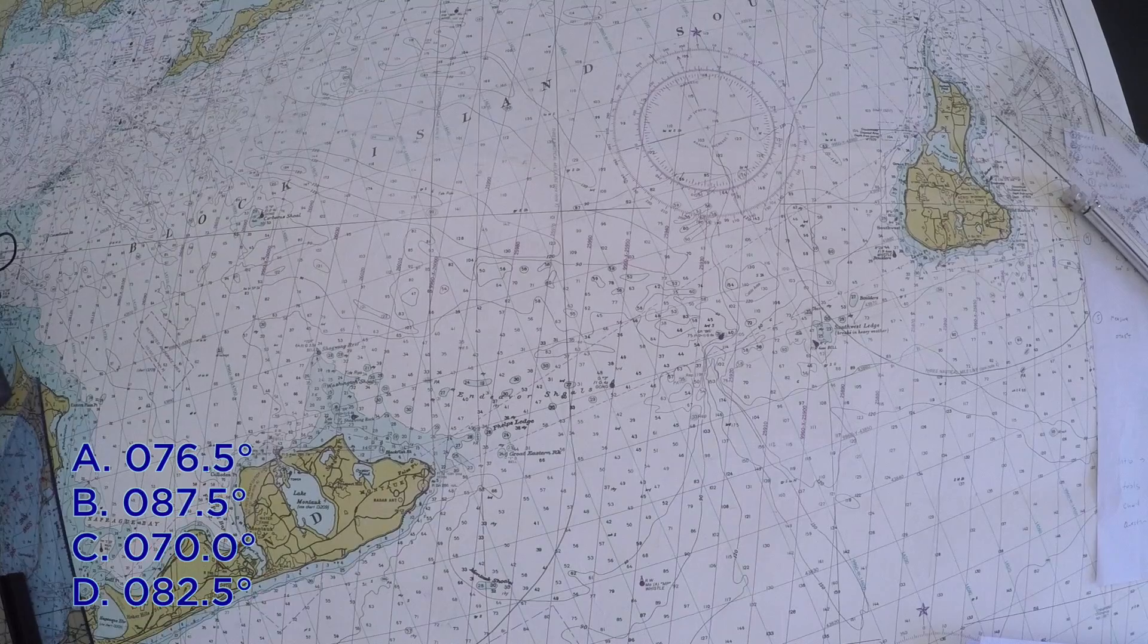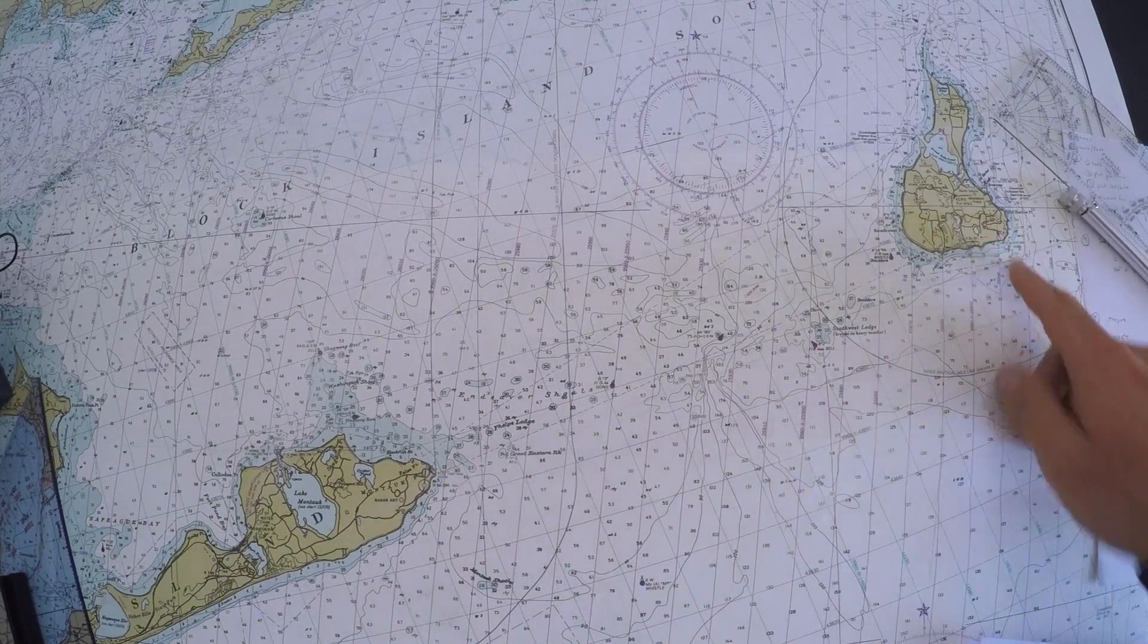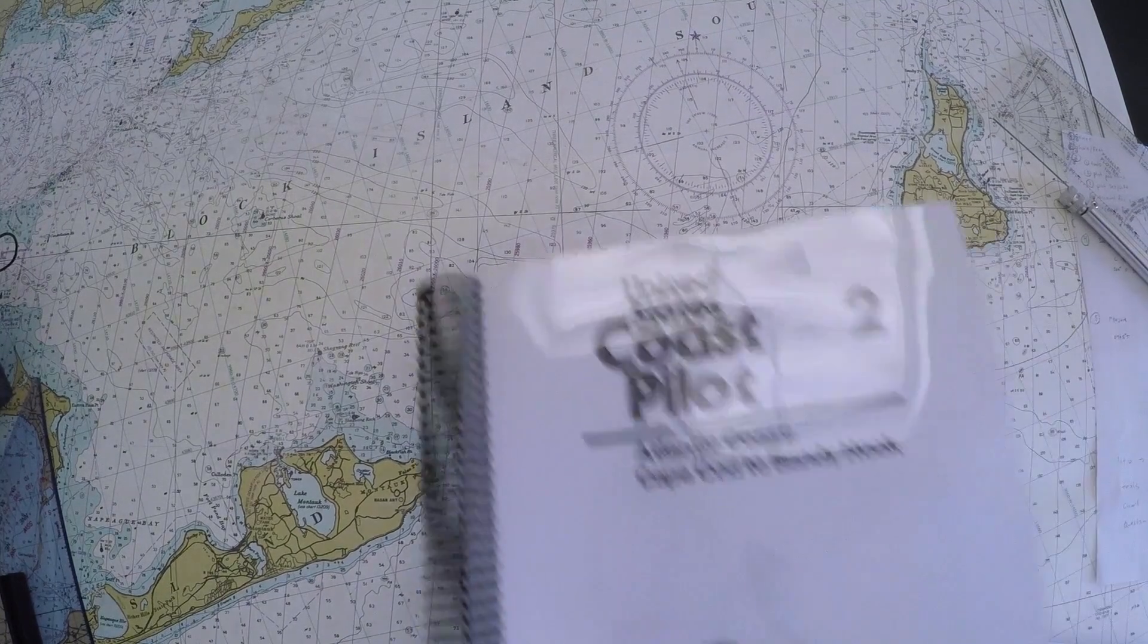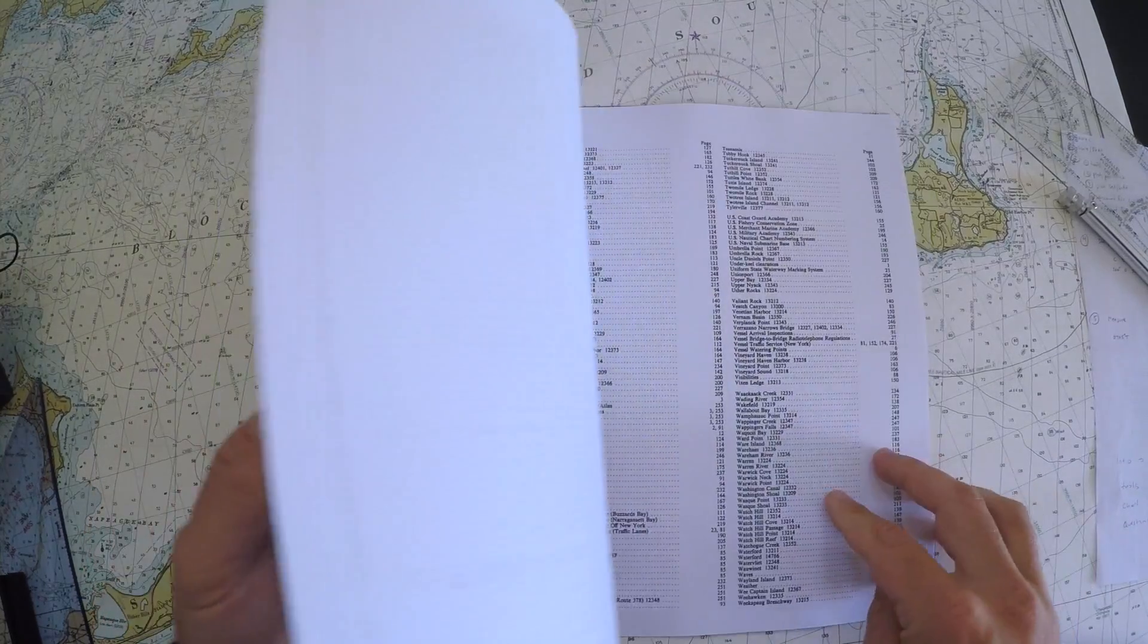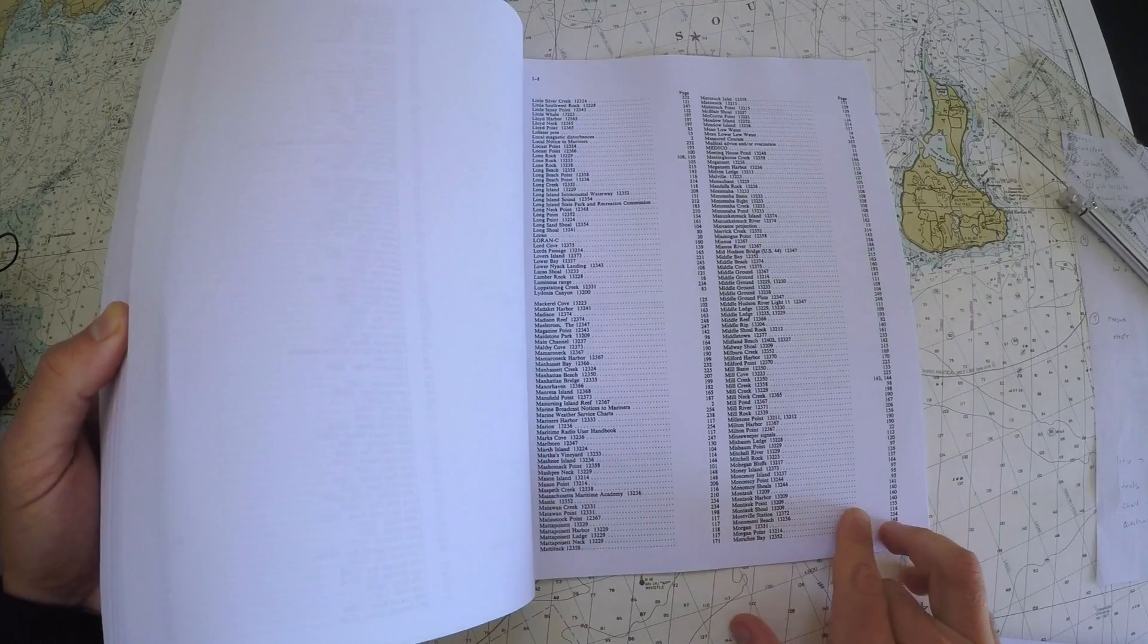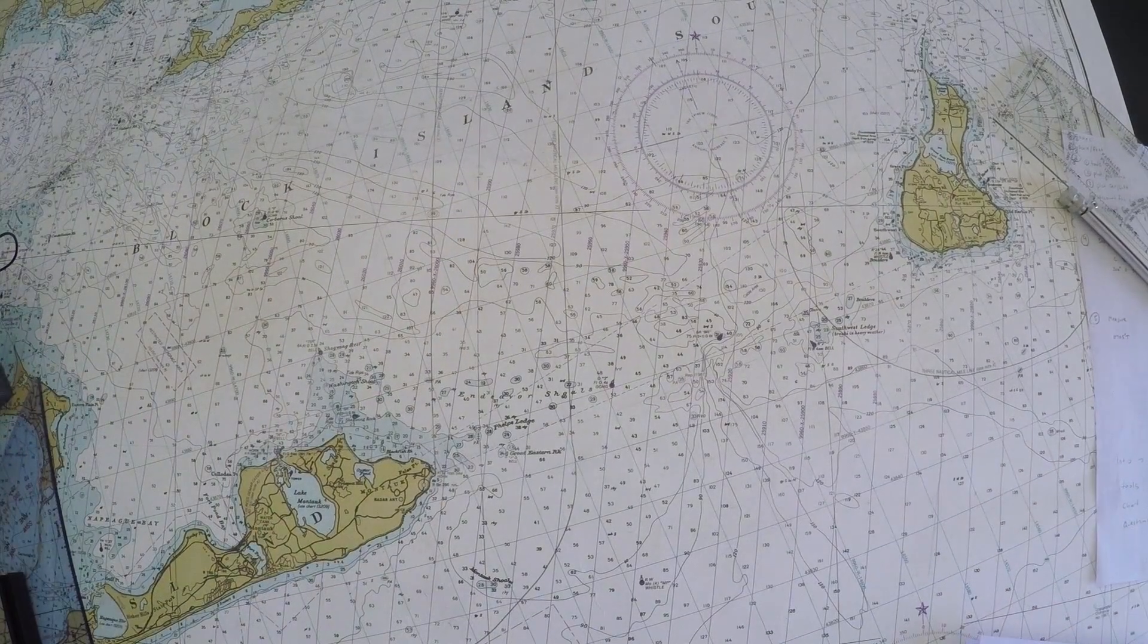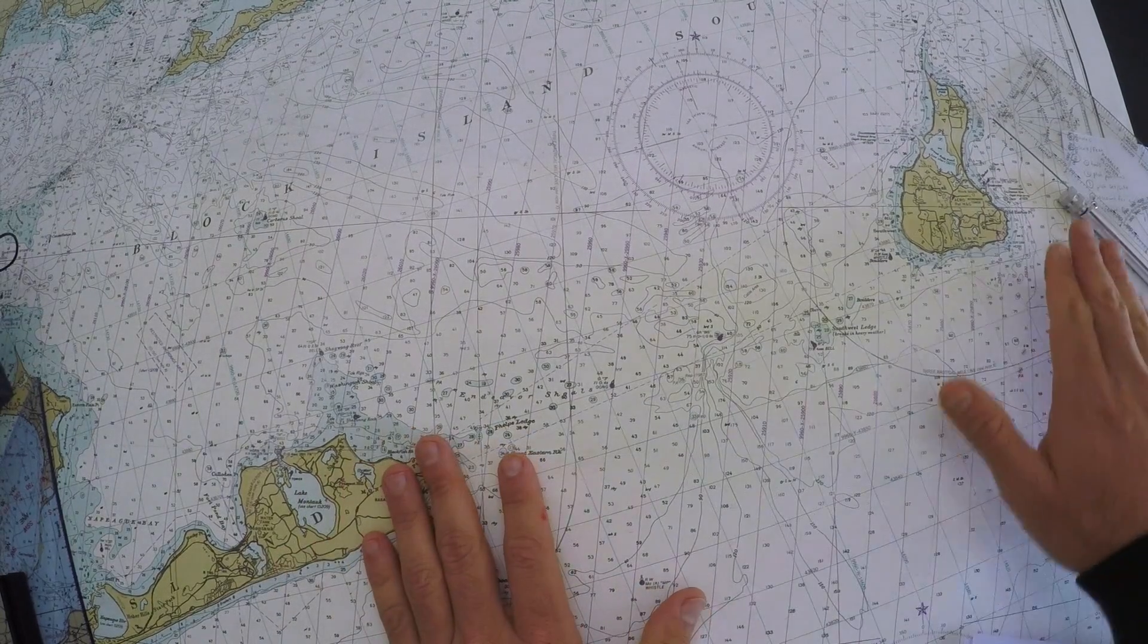So here is Montauk Point, here is Block Island Southeast Point. If you didn't know where these places were, you could look them up in the Coast Pilot and see where Montauk Point is. You go over to page 140 and read that it's the eastern edge of Long Island Sound. The question is asking me what is the course to steer from a point over here to a point over here.